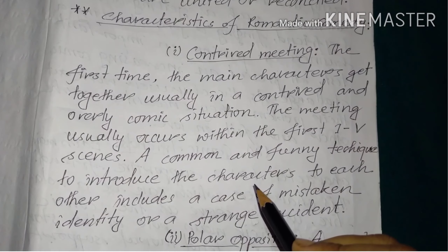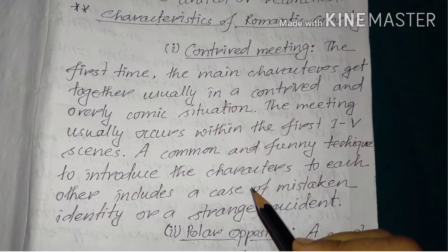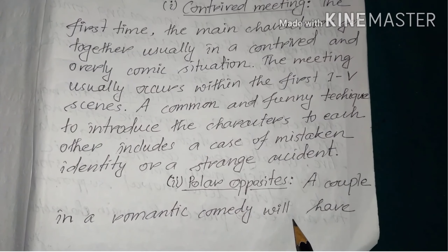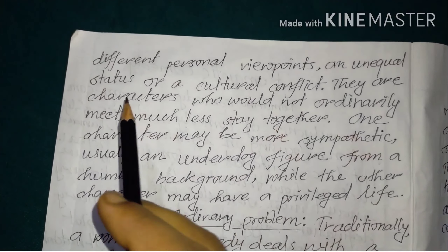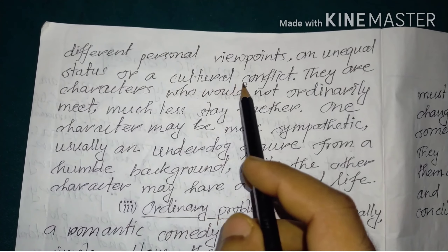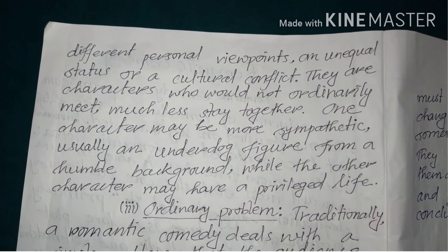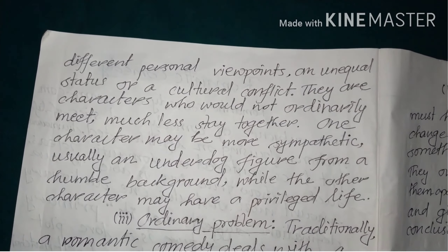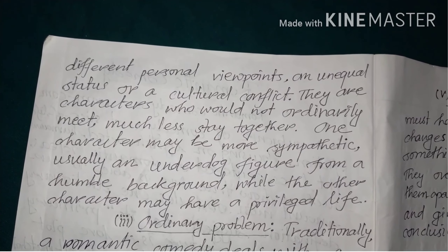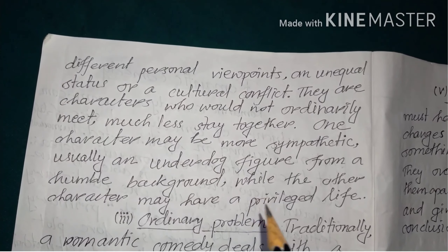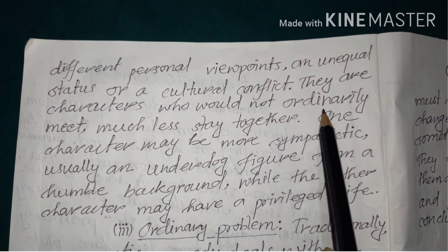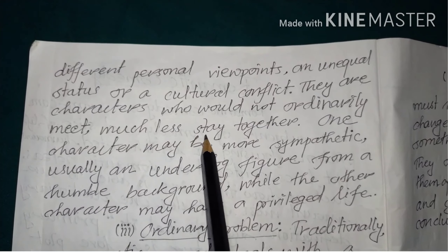The characters are polar opposites. A couple in a romantic comedy will have different personal viewpoints and unequal status, or there may be a cultural conflict. These are characters who would not ordinarily meet, much less stay together.